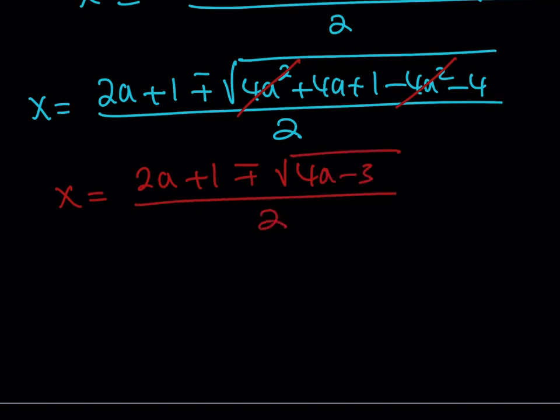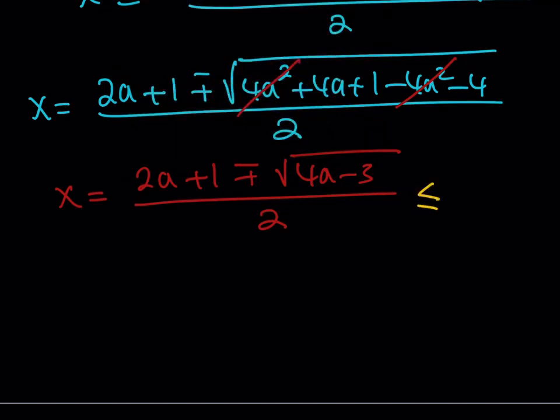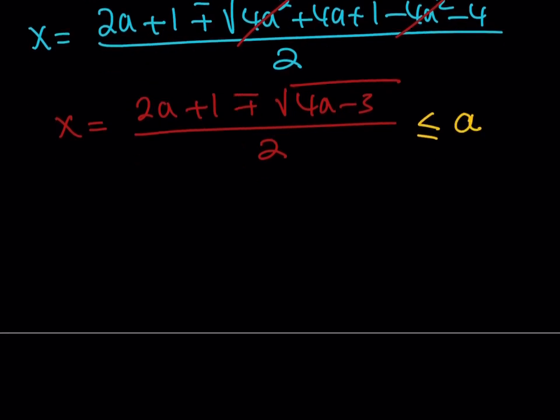Now, recall that at the beginning we established the condition that x needs to be less than or equal to a. That condition must be satisfied. Since our x value is this expression, it needs to satisfy x ≤ a. We have two possible values for x — one with a plus sign and one with a minus sign — so let's consider each one separately.